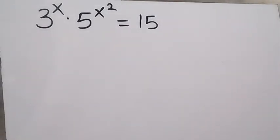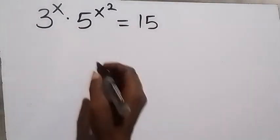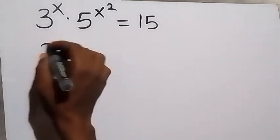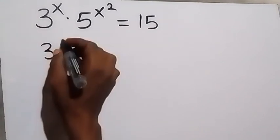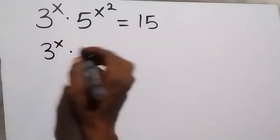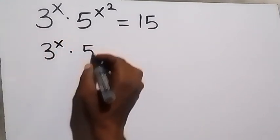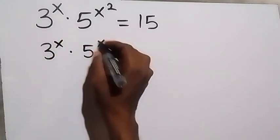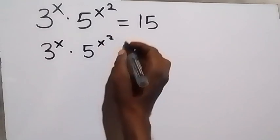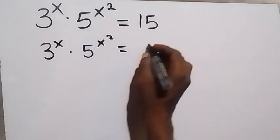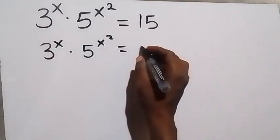From here we can write this again as 3 raised to the power x multiplied by 5 raised to the power x squared equals 15. We can write that as 3 times 5.